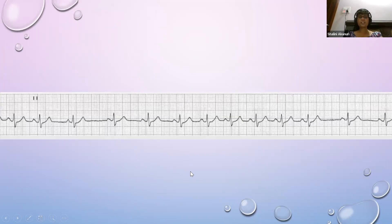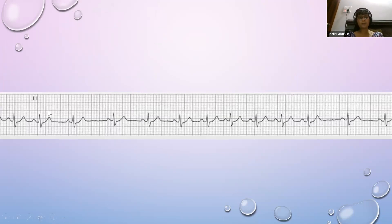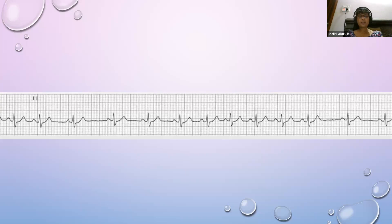Let us quickly interpret this ECG. It looks quite irregular with varying RR intervals - a bit chaotic. The basic principles of reading any ECG apply: look at the P wave, the PR interval, QRS morphology, the ST segment, the T wave, etc. If we analyze it step by step, the RR interval is varying but the morphology of the various waves is otherwise fine.